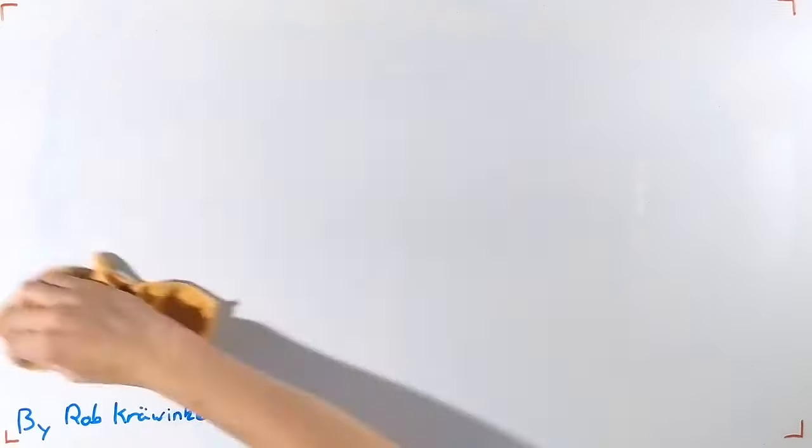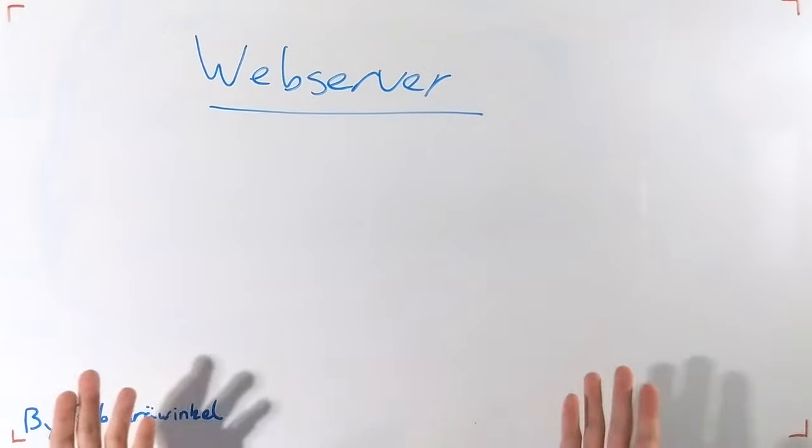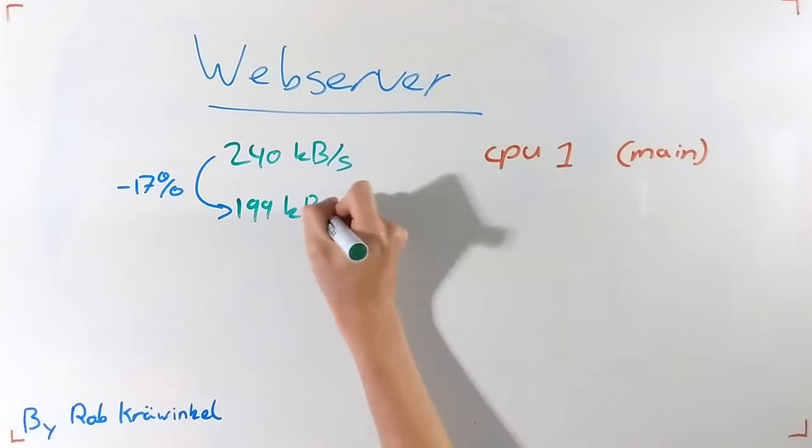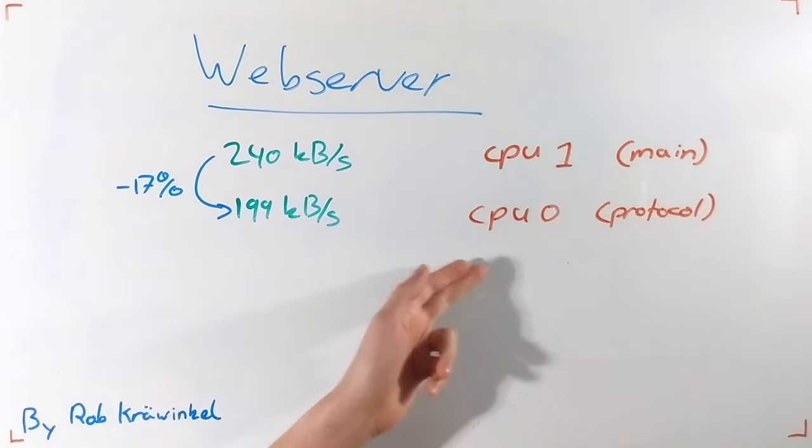So far for the SD card, what about the web server? The web server can reach speeds of up to 240 kilobytes a second when running standalone on the main processing core, known as application core. There's a 17% performance hit when moving to the secondary protocol core.